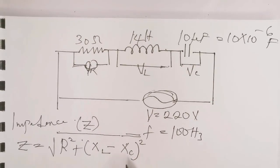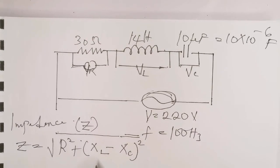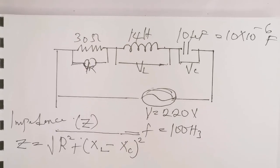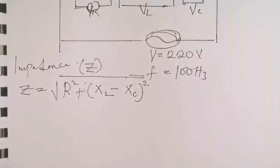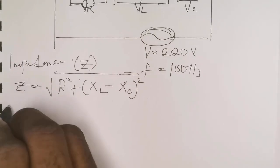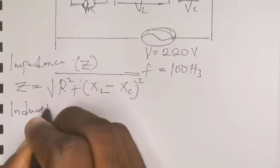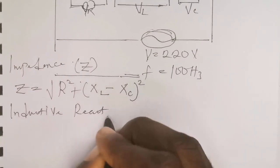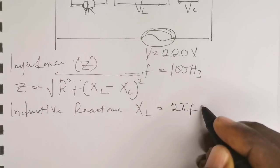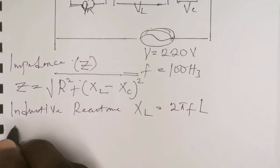We know the value of the resistor, so we now need to find the inductive reactance and the capacitive reactance. XL means the inductive reactance — the resistance across the inductor. XC means the capacitive reactance — the resistance across the capacitor. Since we have the resistor, let's now find the inductive reactance and the capacitive reactance.